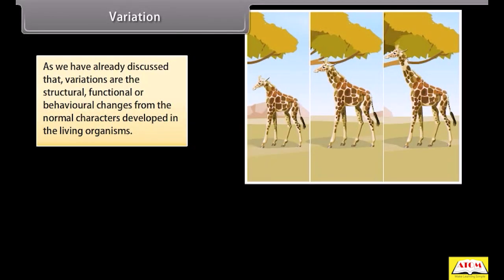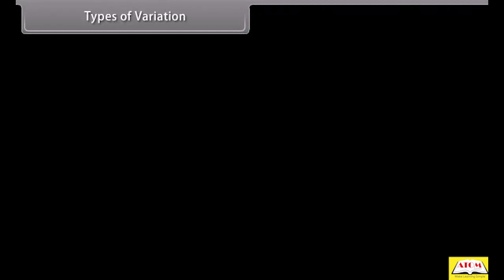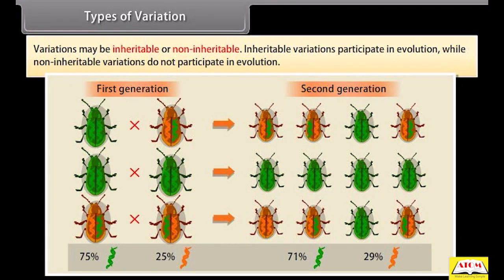Variations are the structural, functional, or behavioral changes from the normal characters developed in living organisms. Origin and accumulation of variations are essential because they provide raw material for evolution. Variations may be inheritable or non-inheritable; only inheritable variations participate in evolution, while non-inheritable variations do not.